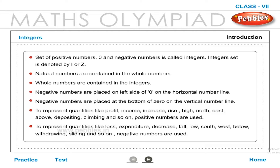To represent quantities like profit, income, increase, rise, high, north, east, above, depositing, climbing, and so on, positive numbers are used.